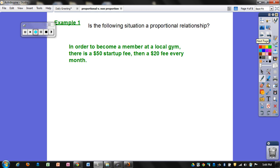So for the first example, is the following situation proportional? Is it a proportional relationship? It says, in order to become a member at a local gym, there's a $50 startup fee, and then you have a $20 fee for every month. So you would write this as the total amount of dollars that you pay is equal to $20 times each month that you're a member, plus the $50 startup fee.